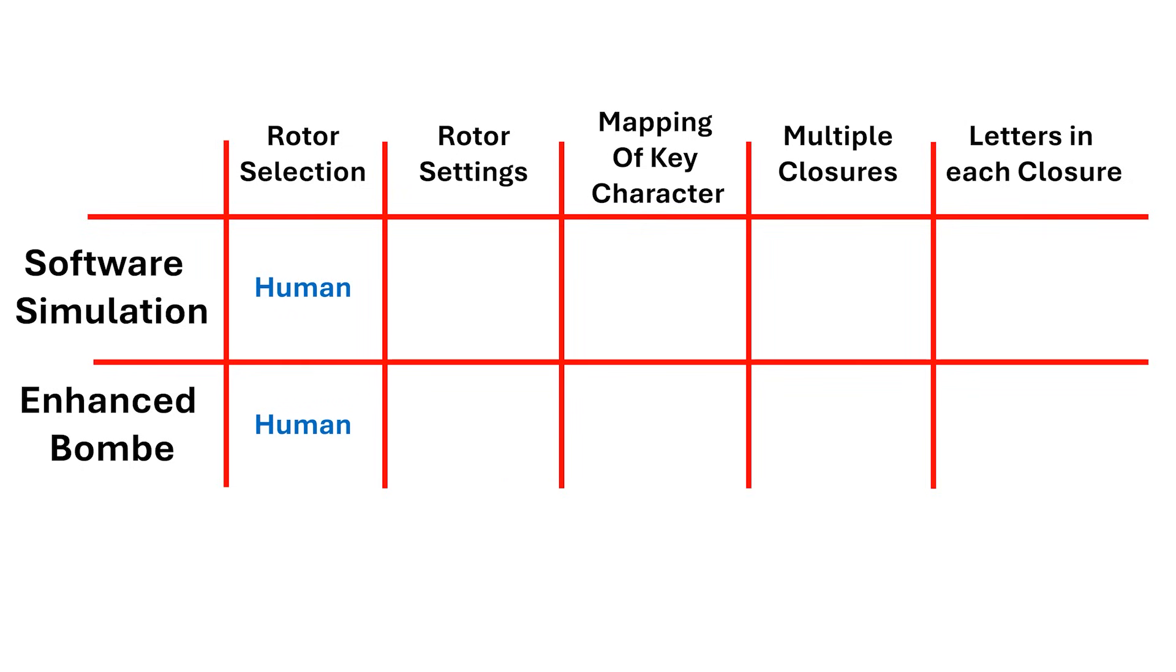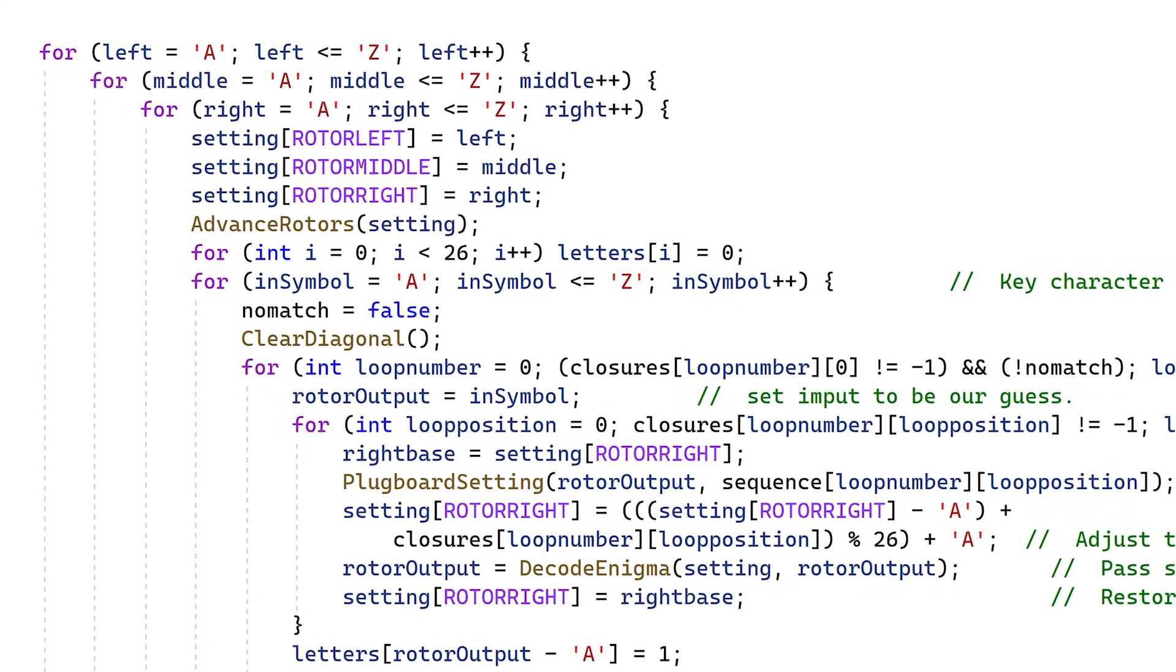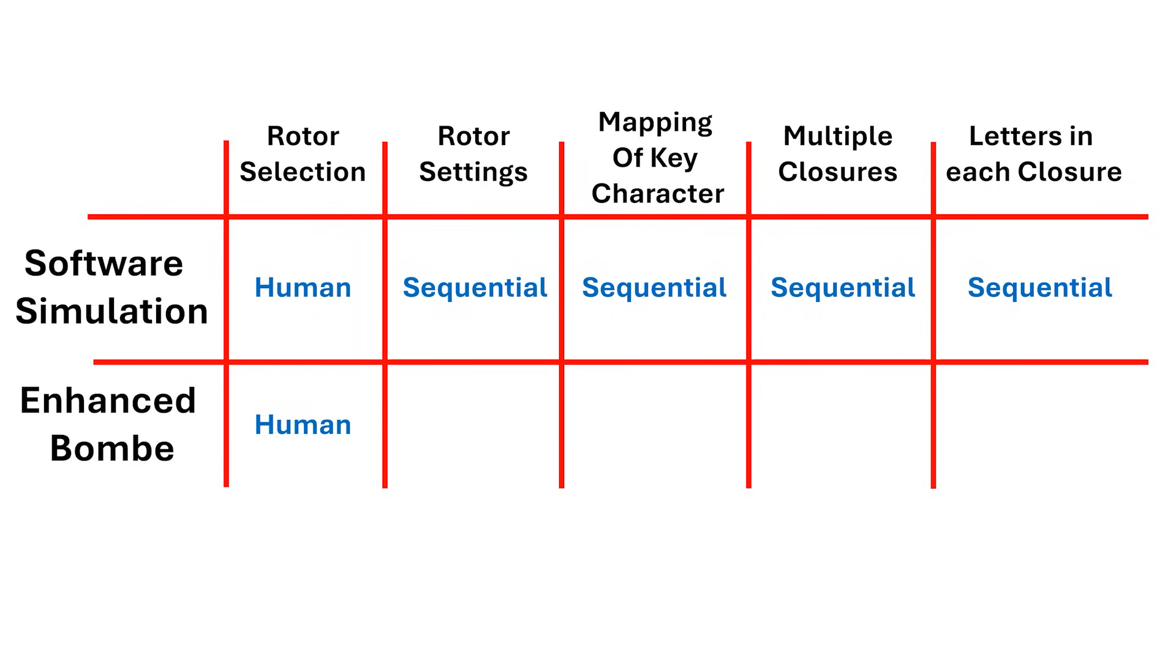Every step in the software simulation was done sequentially, which is why we ended up with six deep nested for loops. Not such a problem with today's hardware, but not really solvable back in the early 1940s.